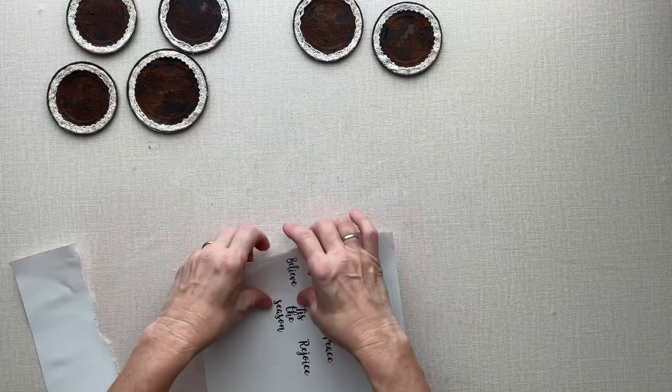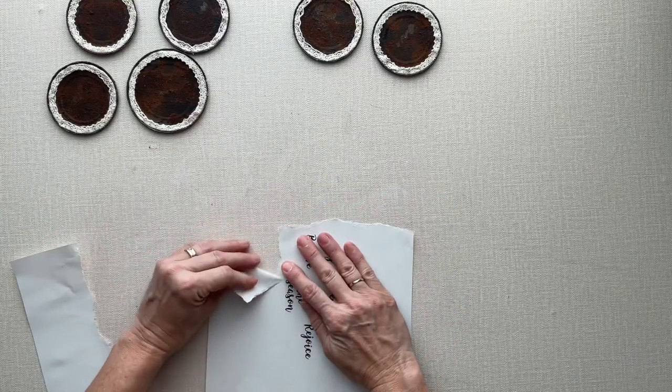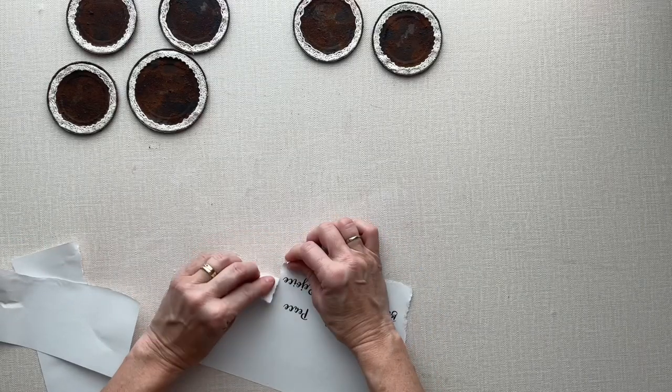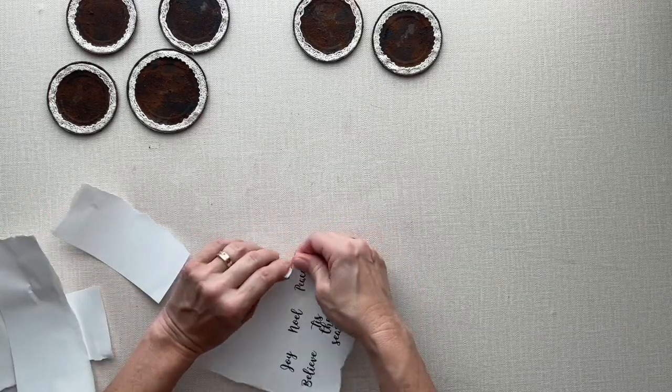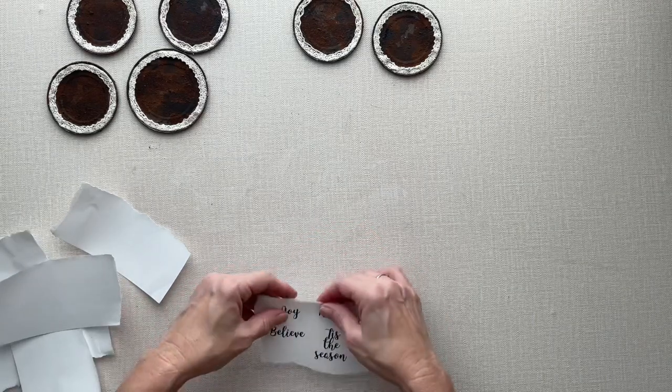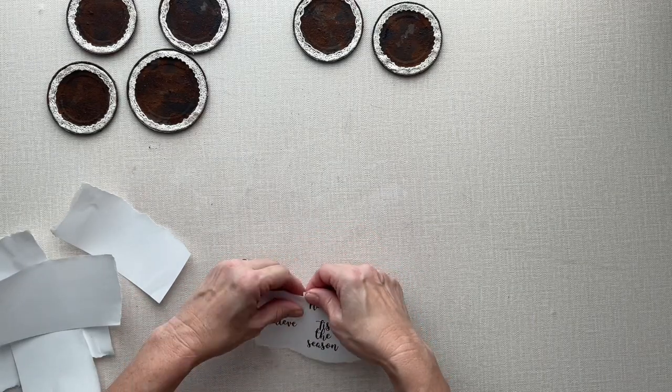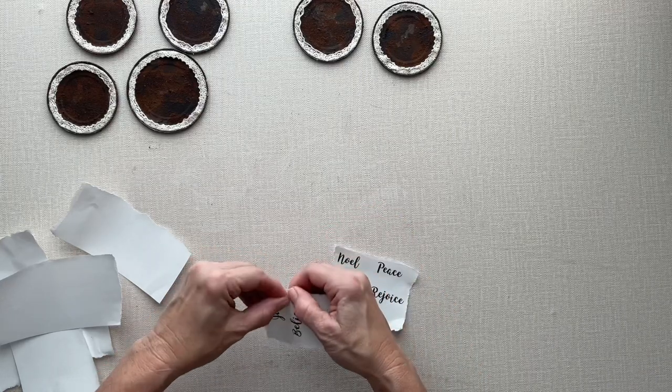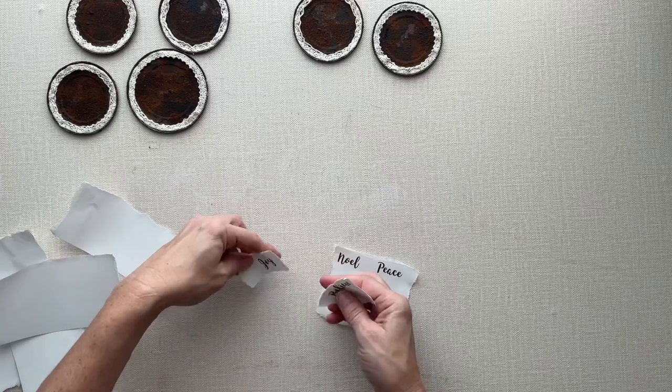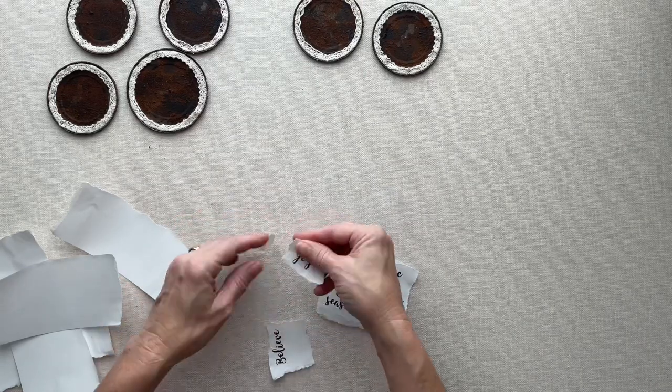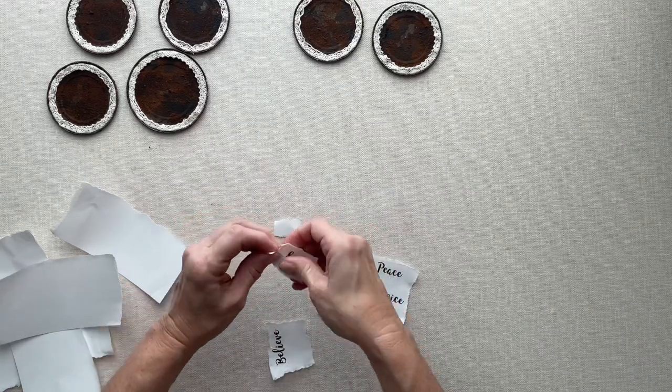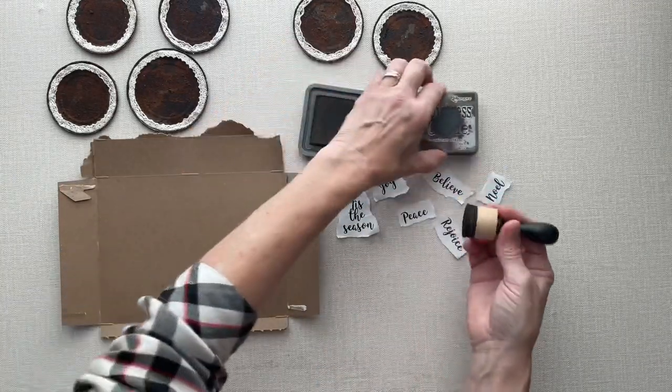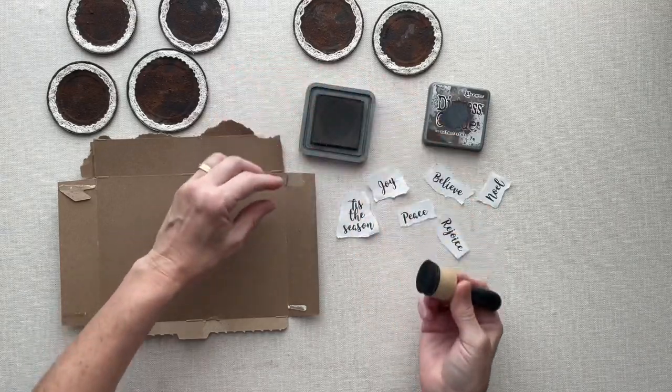I'm going to tear out each word or phrase, and I'm going to be distressing these edges. When you're tearing paper and you're going to be distressing them, the part that you're going to throw away needs to tear toward you so that it gives you that rough edge on the front.